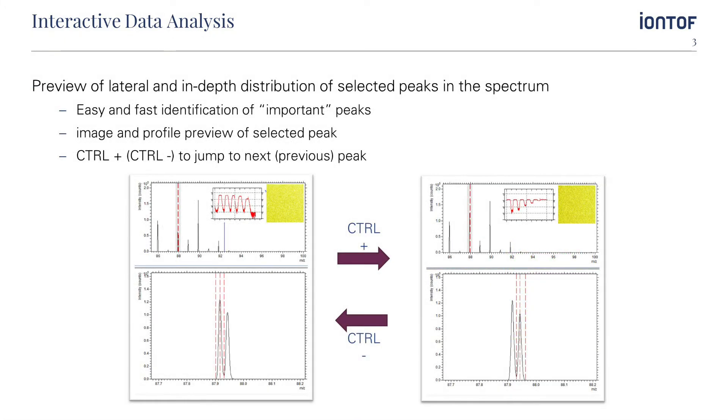Even better, it is not necessary at all to add a peak to the peak list. The new preview windows in the spectrum view show the spatial distribution of the mass interval as soon as it is selected. With pressing Ctrl and plus or minus you can jump to the adjacent peaks for a fast and easy identification of important masses.